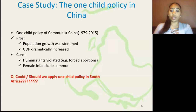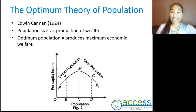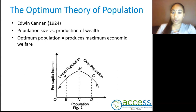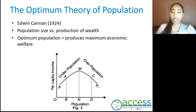We now move on to understanding how the GDP of a country affects a population. We look at the optimum theory of population, which was created by Edwin Cannon in 1924, which states that the population size will affect a country's GDP. This means that the optimum population will equate to the maximum economic welfare. On our graph, with per capita income on the y-axis and population on the x-axis, we see that when a country or region is underpopulated, the economic welfare is minimum. Once it reaches a state of optimization, there is maximum economic welfare. However, once the population increases and there is overpopulation, the GDP will decrease again.